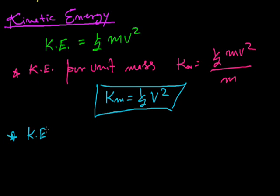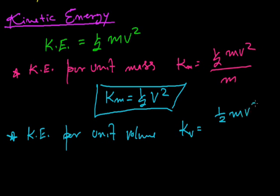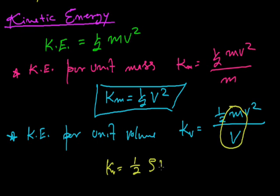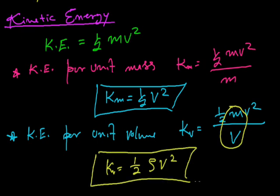Similarly, kinetic energy per unit volume, Kv, is half MV squared upon volume. Here V is velocity and capital V is volume. Then Kv is mass upon volume, which is density, that is half rho V squared.